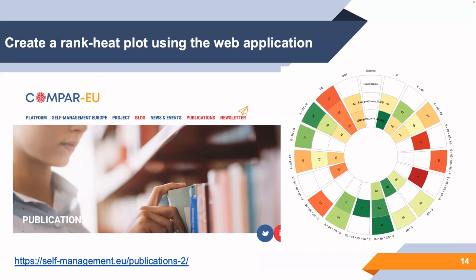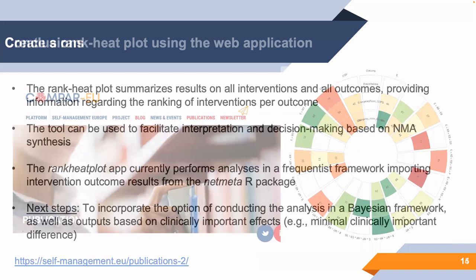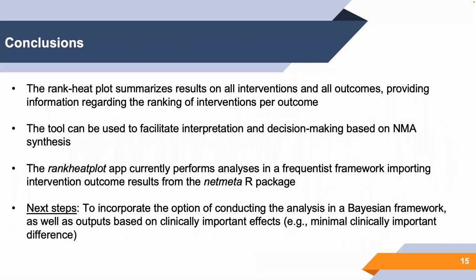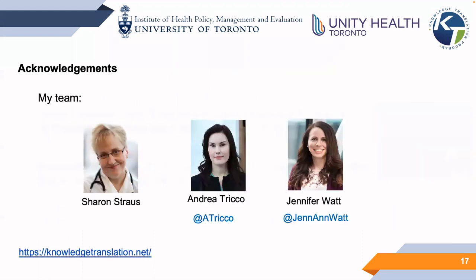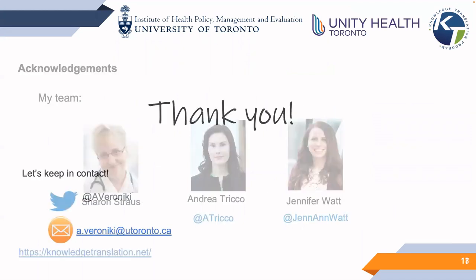Overall, the ranking plot can be used to quickly recognize the most likely best and most likely worst interventions with respect to their effectiveness and safety in any given outcome. It can also identify treatments that have not been studied for a given outcome, visible as uncolored sectors. Currently, the ranking plot performs all analysis in a frequentist setting using the NetMeta R package, but we are extending the tool to incorporate Bayesian analysis as well as network meta-analysis results according to minimal clinically important differences. I would like to acknowledge the software developers and my team for their support in developing this tool. Thank you for listening.